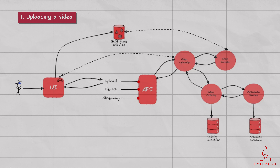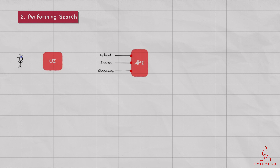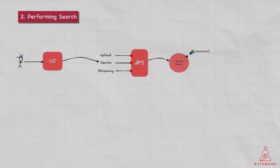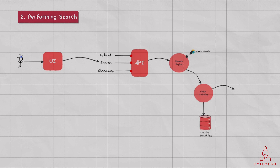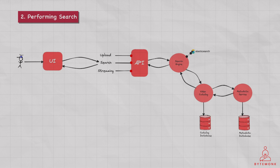For our second use case, performing a search: the user initiates a search request by typing in keywords or selecting search criteria on the front end UI. The front end UI sends the search request to the search engine microservice. The search engine microservice uses Elasticsearch to search for relevant videos based on the search criteria and retrieves the video IDs of the matching videos. The search engine microservice sends the video IDs to the Video Catalog microservice, which retrieves the metadata for those videos from the video database and sends it back to the search engine microservice. The search engine microservice then aggregates the metadata and sends the search results back to the front-end UI, which displays the search results to the user.